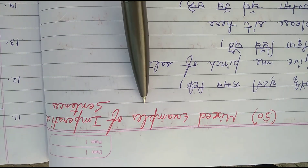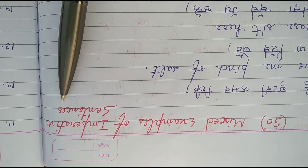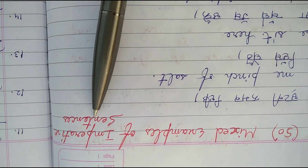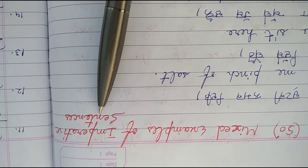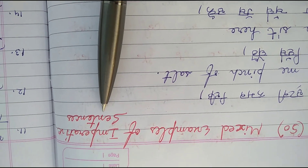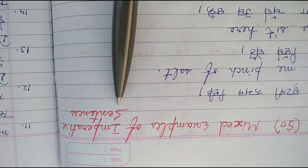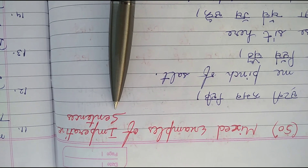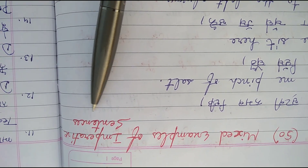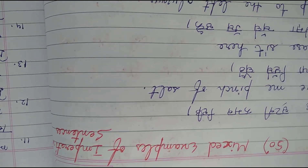Today I am going to teach you 50 mixed examples of imperative sentences. In the last 2 videos I have described how to make imperative sentences, their types, and where they are used. If you have not watched that video, please visit my channel English for Beginners and watch that video. I will give a link in the description box also so that you can watch them.